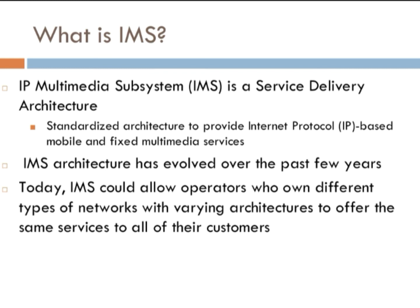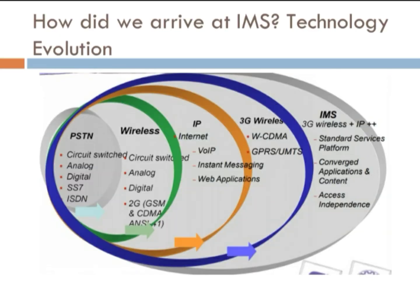IMS is a service delivery architecture. Looking at the evolution over the past few years: first there was PSTN — the Normal Circuit Switched Network — used for analog voice calls. Then we got wireless 2G and data services. Then IP — Internet Protocol — enabling Voice over Internet Protocol. Then instant messaging. Then 3G wireless, where we have GPRS and UMTS.